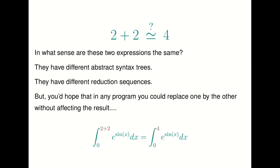Hello and welcome to the final lecture of semantics. In this lecture we're going to talk about the notion of semantic equivalence. Let's start with an example. At the very top of the slide I've written '2 plus 2 is equivalent (with a question mark) to 4.' When you see this, you think of primary school arithmetic and of course these are the same — but let's take a step back and think about in what sense these two expressions are the same.